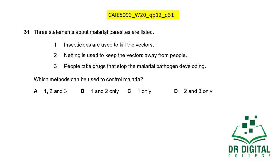In this question, three statements about malaria control are listed. Statement 1: insecticides are used to kill the vectors — yes. Statement 2: netting is used to keep vectors away from people — yes, mosquito nets. Statement 3: people take drugs that stop the malarial pathogen developing — yes, anti-malarial drugs. All three methods can be used to control malaria. The answer is A.